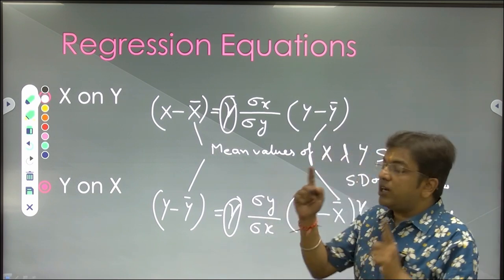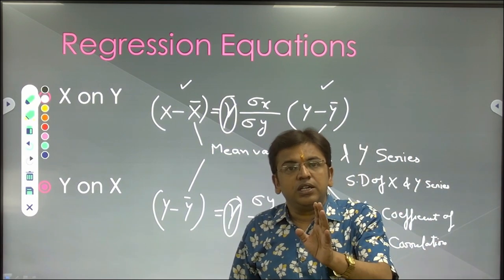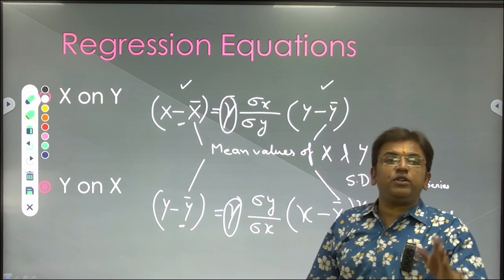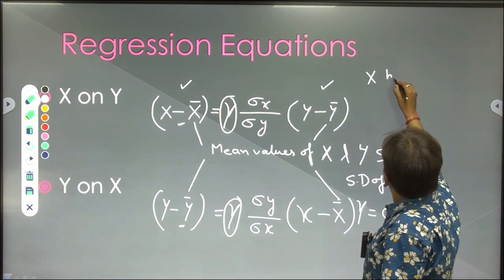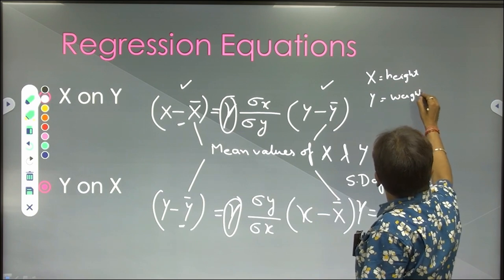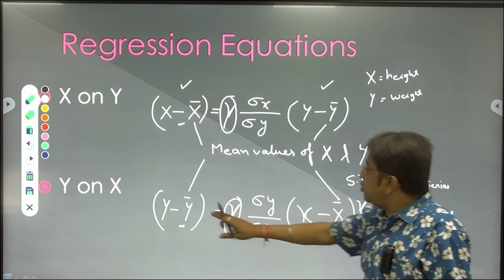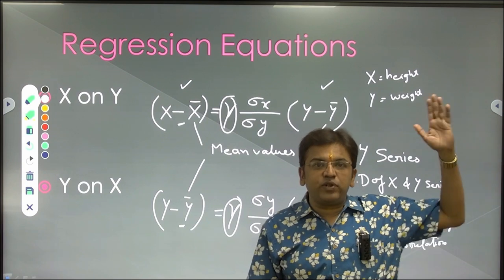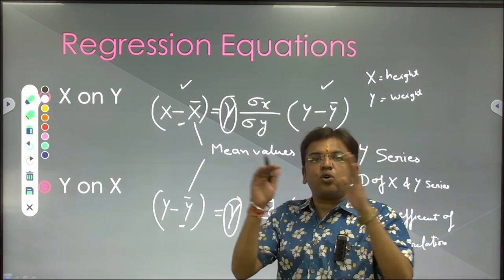Whatever is independent you keep on one side, and what is dependent you keep on the other. Whatever value you are going to find — the unknown value — should be put on that side. For example, if you are finding the relationship between height and weight of certain individuals, where x is height and y is weight: if height is given, you find the weight; if weight is given, you find the height. Whatever you have to find, keep it on the right-hand side. This is regression analysis.